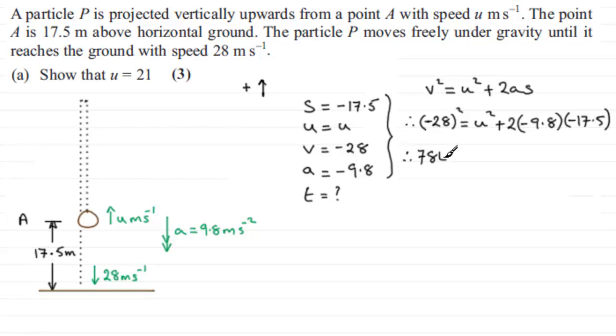If we work this out, you should find that minus 28 all squared comes to 784. Then you've got equals u squared, and if you multiply these together you end up with plus 343.